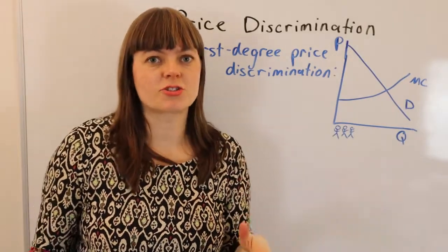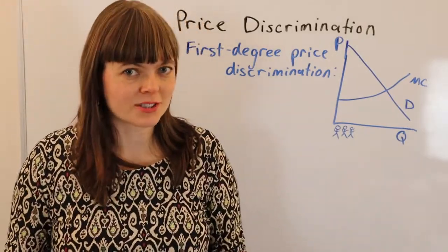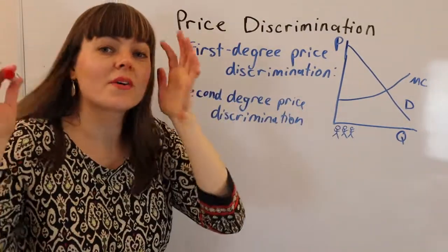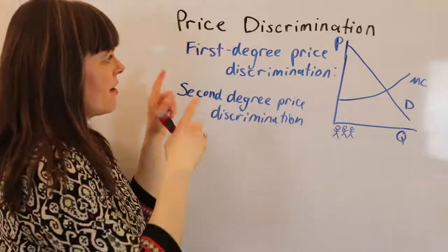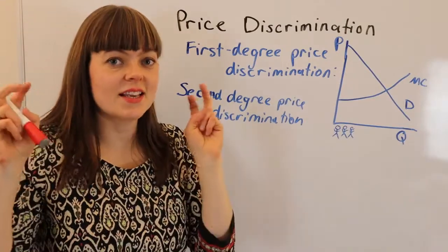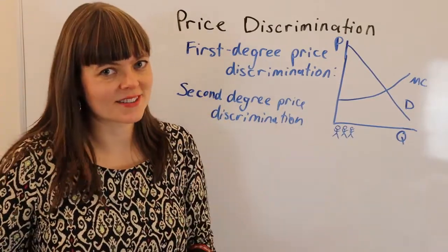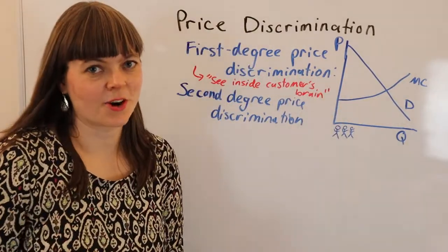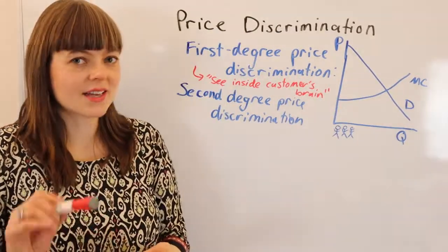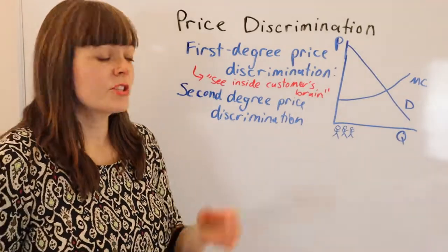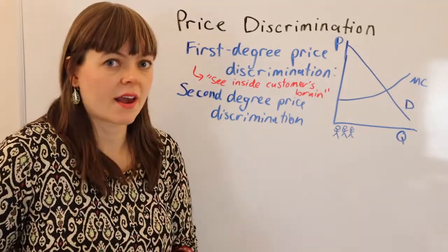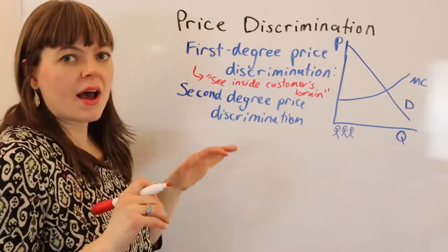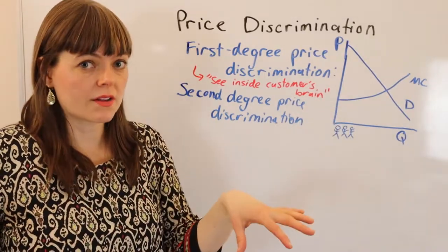Second degree price discrimination — what is it? Just to note: first degree price discrimination is the 'see inside the customer's head' price discrimination. Second degree price discrimination, which is probably the most common kind, is where you price discriminate by separating out the quality of products.